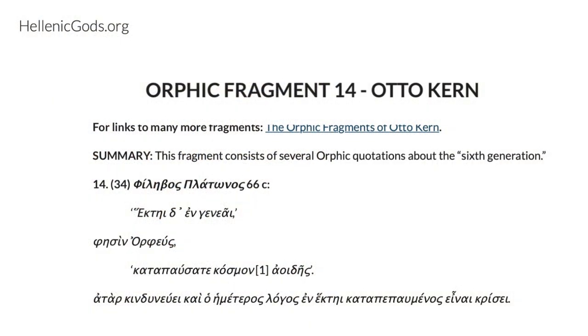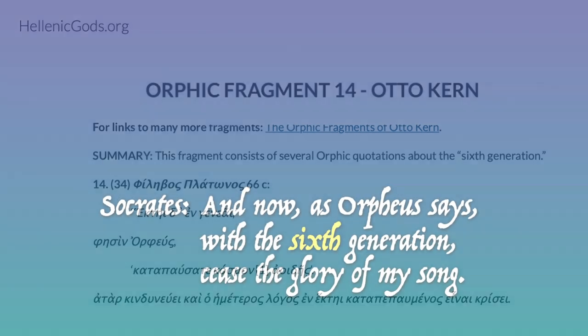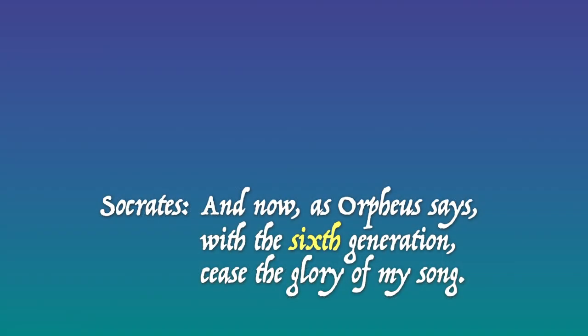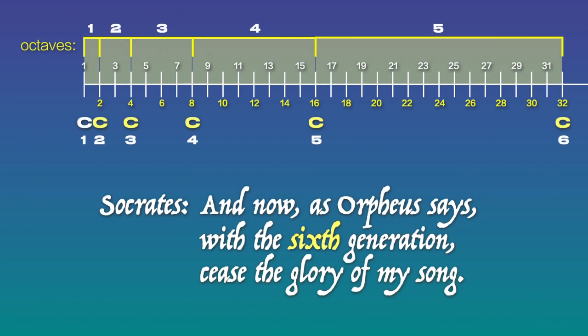In Otto Kern's Orphic fragment number 14, we find Plato in his book Philobus, in which Socrates is quoting Orpheus. And now, as Orpheus says, with the sixth generation, cease the glory of my song. Many interpretations have been given for the possible meaning of this line, but I'd like to suggest another, in light of the fact that in the first 32 harmonics, the note of C is generated six times. That's a total of six generations.